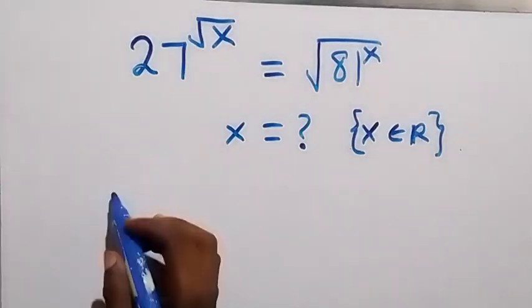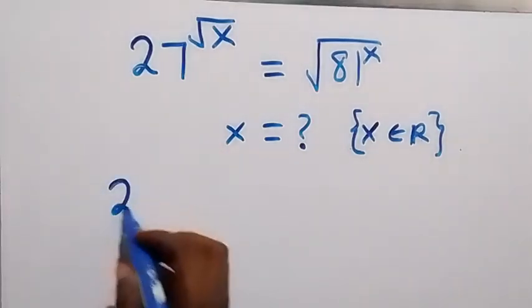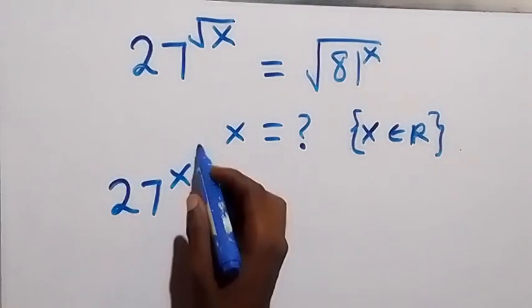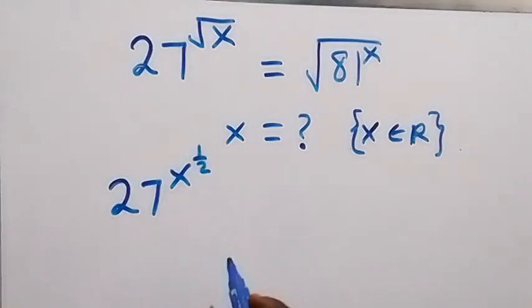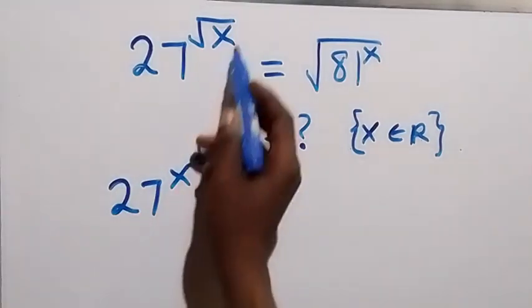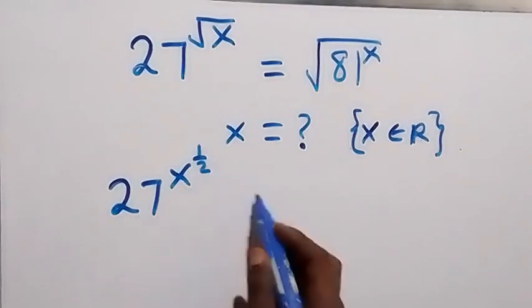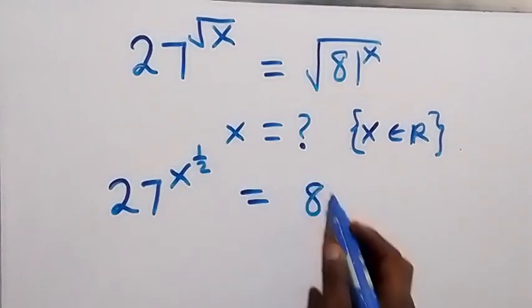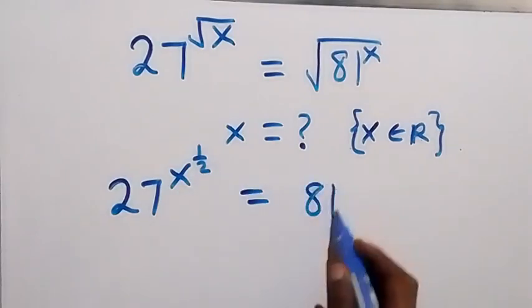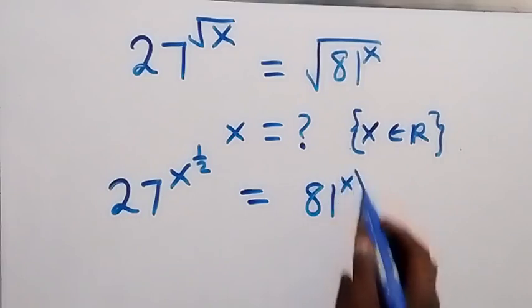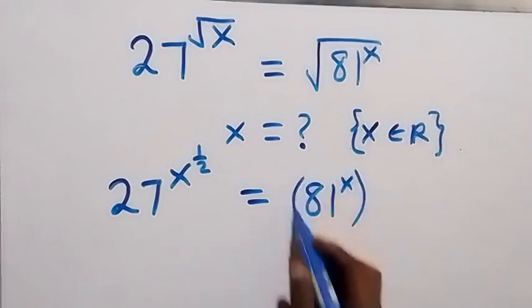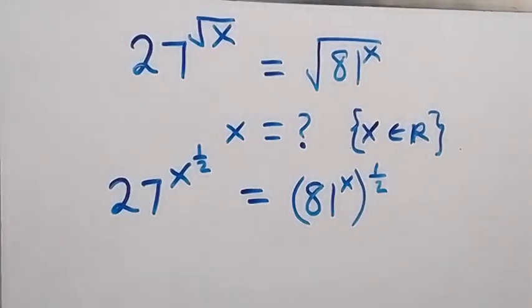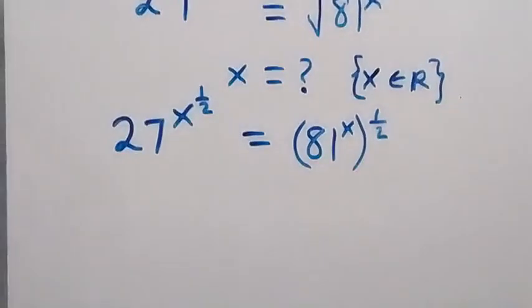From here, let's write this as 27 raised to power x, then raised to power half. We can write root x as x raised to power half. Similarly, we can write the right side as 81 raised to power x, then raised to power half — the square root becomes raised to power half.